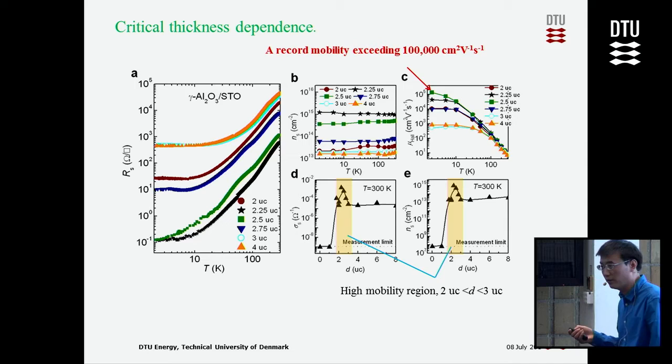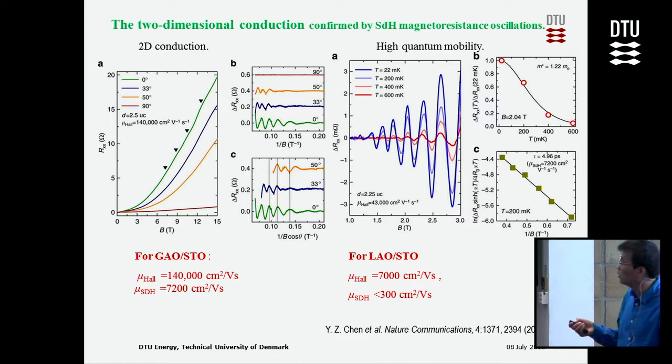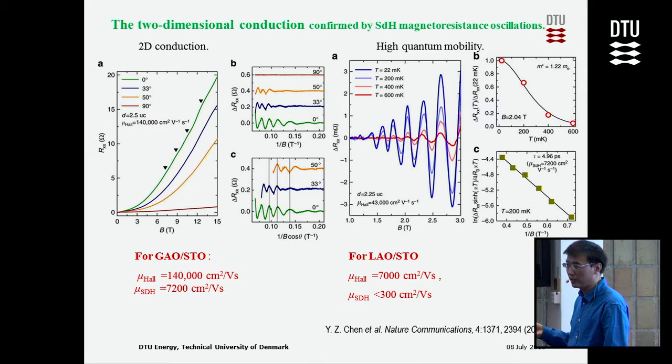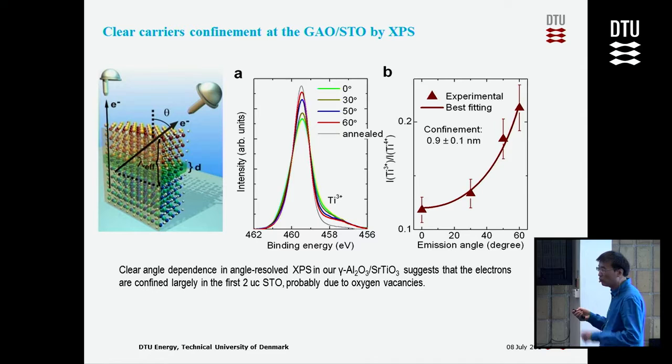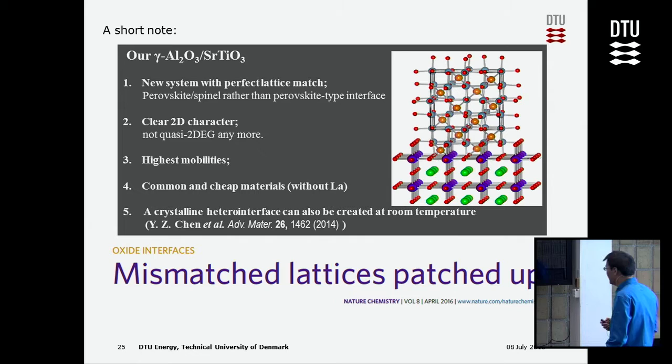We also did a lot of low-temperature transport measurements at this interface, and everything seems at least 10 times higher mobility than other systems. We also determined the conduction layer thickness to be around only 1 nanometer — basically 2 unit cells.